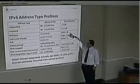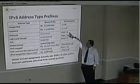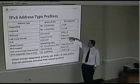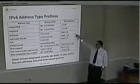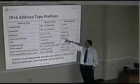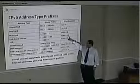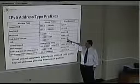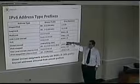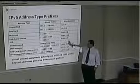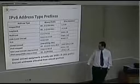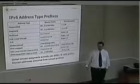Multicast space will be all under ff00::/8. ULAs will be all under fc00::/7. Global unicast is everything else, and basically we won't need to worry about the rest.